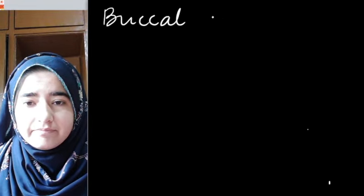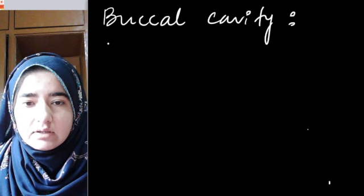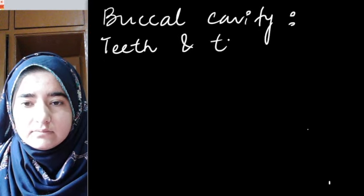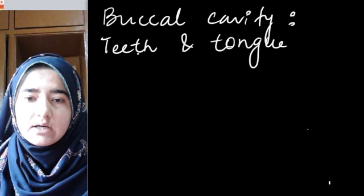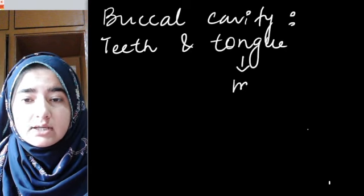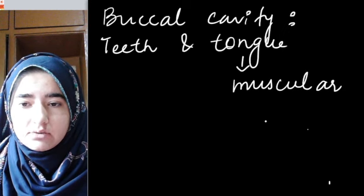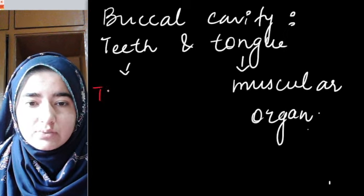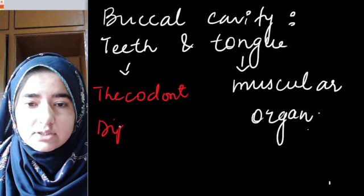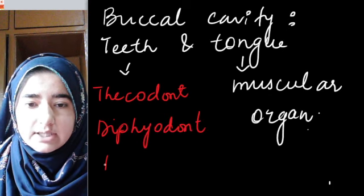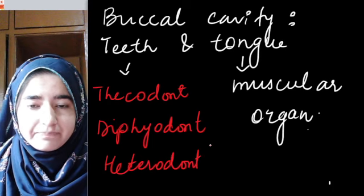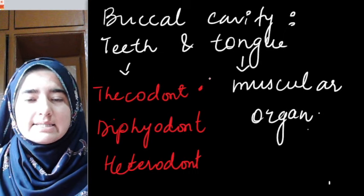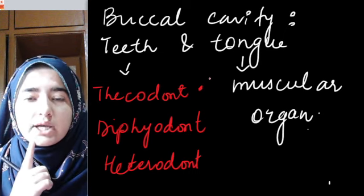In the mouth, or buccal cavity, we mainly have teeth and tongue. The tongue is a muscular organ which helps in mastication of food. Talking about teeth, we need to learn three terms: thecodont, diphyodont, and heterodont dentition.